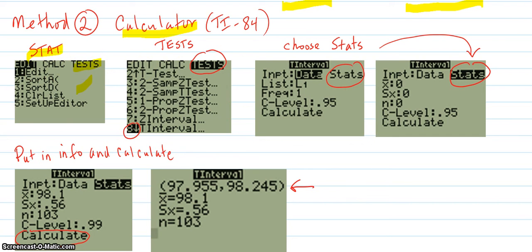You arrow over to test and go down to number eight, t interval. And that looks like this. And you'll have a choice of data or stats. You choose stats. You go over here to stats, choose that, and that becomes black like that.